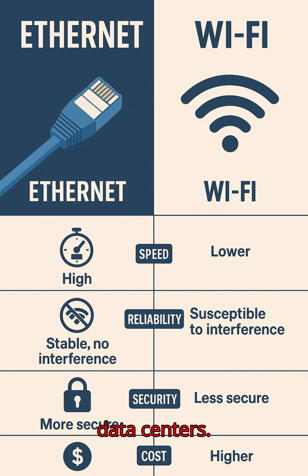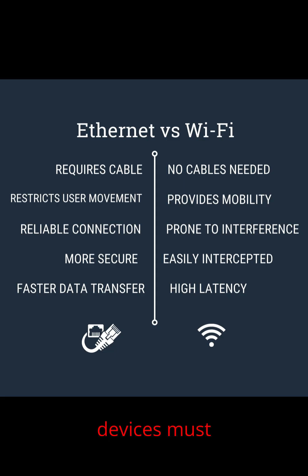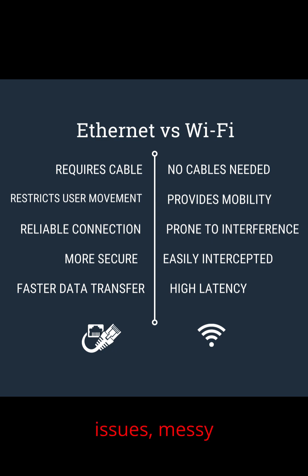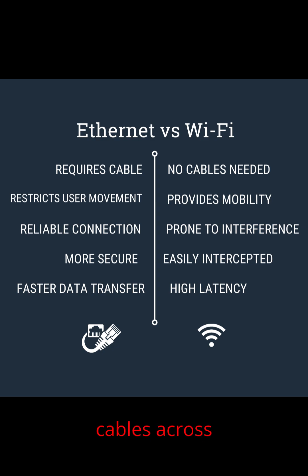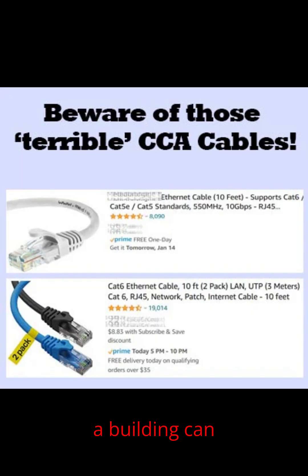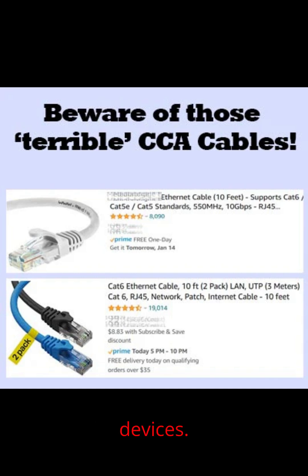Drawbacks of Ethernet: limited mobility, as devices must be physically connected. Cable management issues — messy and complex in large setups. Installation cost — running cables across a building can be expensive. Not suitable for all devices; smartphones and tablets